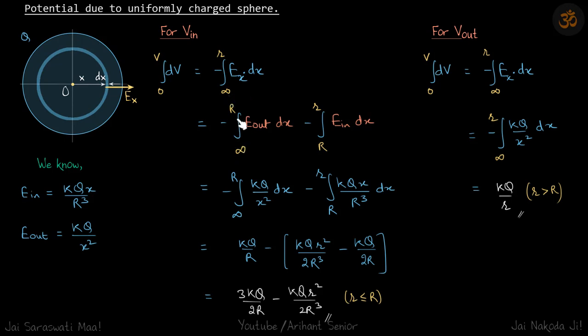So this will become infinity to r e out dx and this will be r to r e in dx. So e out will put this and e in will put this and we integrate and put the limits and we get our answer. So this is the potential inside the sphere.